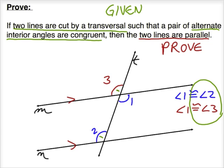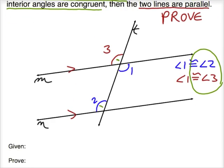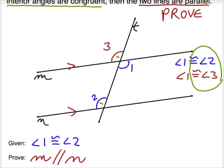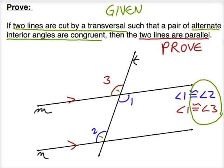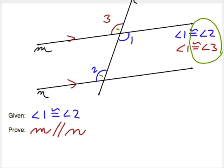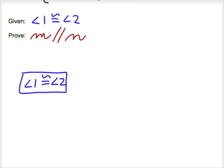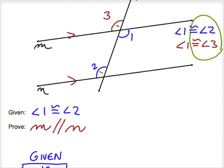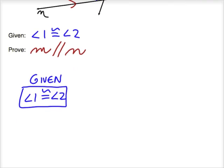Now let's put it together in a rigorous proof. Let's restate the given and prove information in terms of our diagram. We're given that angles 1 and 2 are congruent — in other words, alternate interior angles are congruent — and our job is to prove that M and N are parallel. Angles 1 and 2 are congruent, and we know that's true because it's given information; that's the hypothesis of the conditional statement. Also, we know that angles 1 and 3 are vertical angles, so we'll want to mention that fact and then state that vertical angles are always congruent.